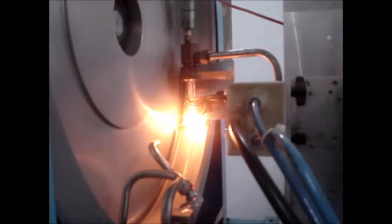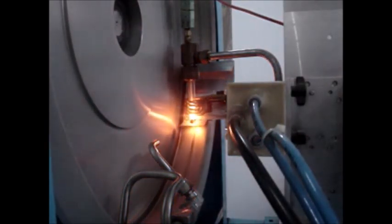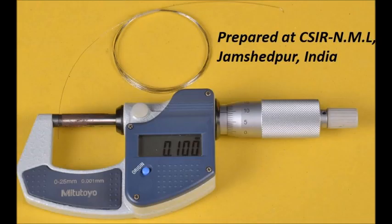The master alloy is taken in quartz crucible, induction melted and ejected out in a rotating water drum to get rapidly quenched nanostructured microwires.